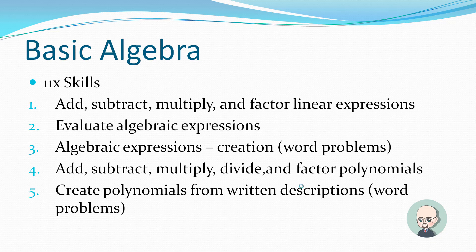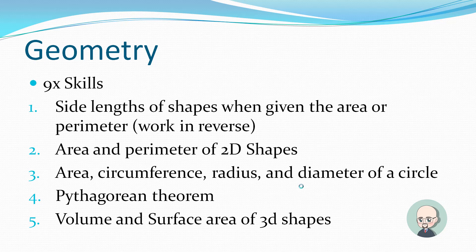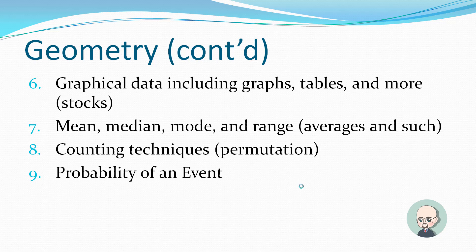The next domain is going to be geometry. There's nine skills. The side lengths of shapes when given the area or perimeter. You have to work in reverse. The area and perimeter of 2D shapes. The area, circumference, radius, and diameter of a circle. That's a bunch of geometry involving circles. The previous area and perimeter of 2D shapes was mostly involving squares and rectangles. The Pythagorean theorem. This is trigonometry. This involves triangles. The volume and surface area of 3D shapes. That's three dimensions. That's in real life. Something you can touch. Two dimensions is like animation. It's flat.